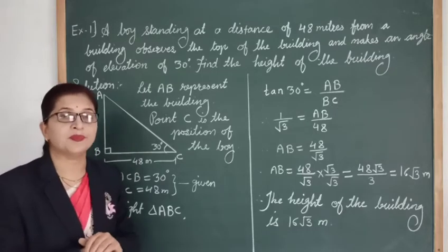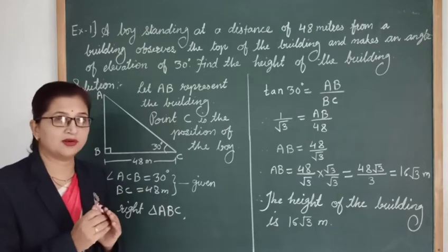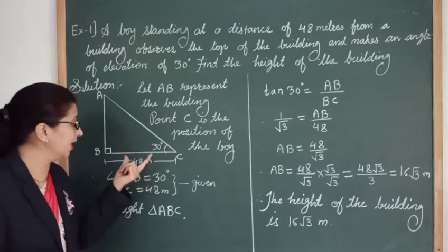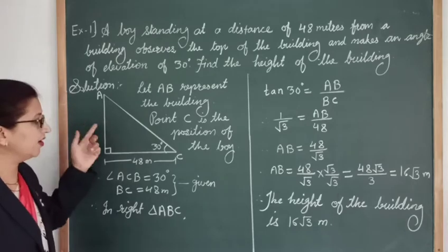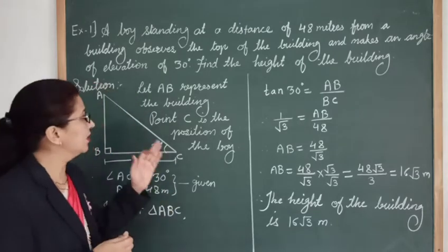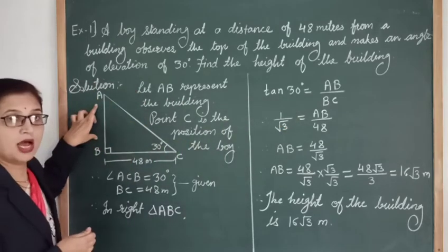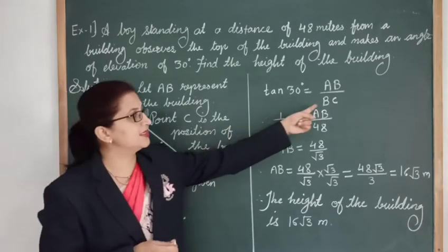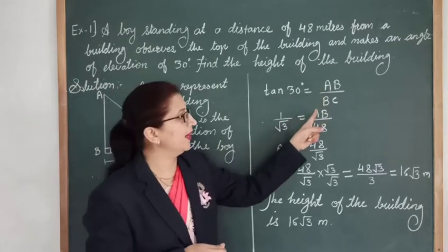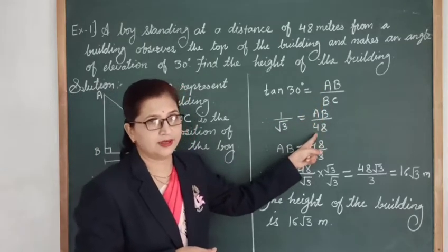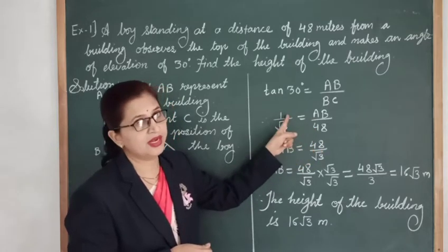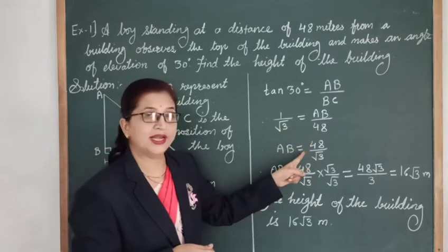We can use either tan or cot; the general approach uses tan. So: tan 30° = opposite/adjacent = AB/BC. The value of tan 30° is 1/√3, and BC = 48. Therefore: 1/√3 = AB/48. Transferring 48 to the other side gives AB = 48/√3. Whenever the denominator contains a surd, we rationalize it by multiplying numerator and denominator by √3, giving AB = 48√3/3.